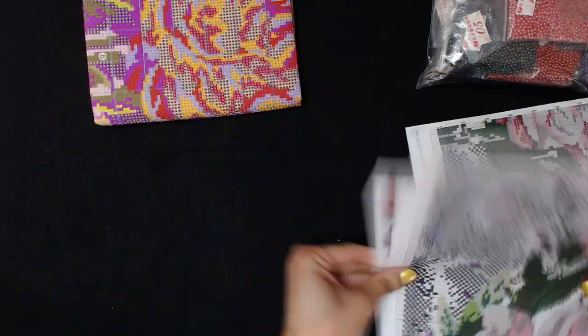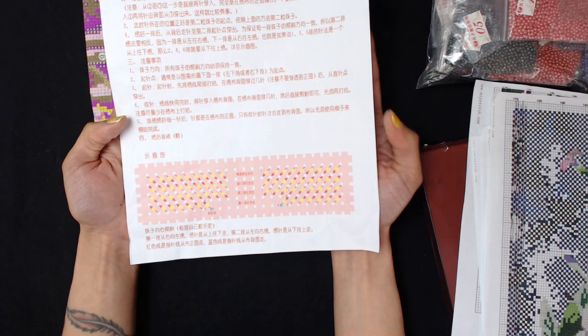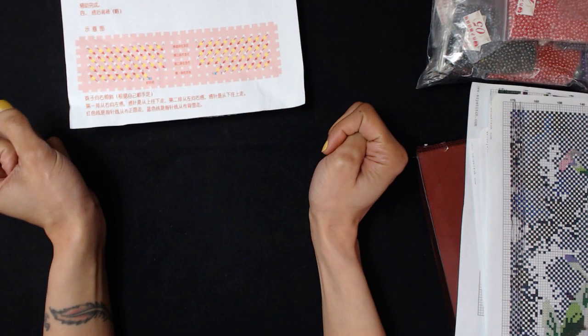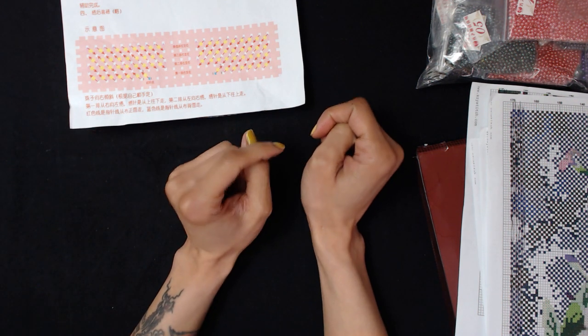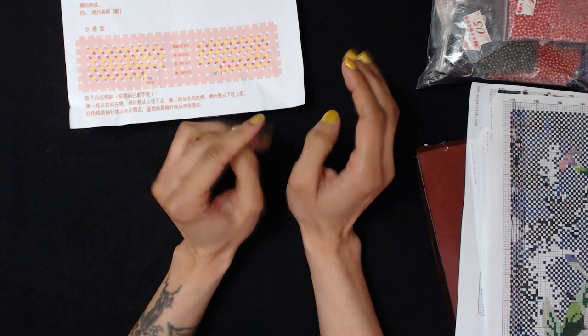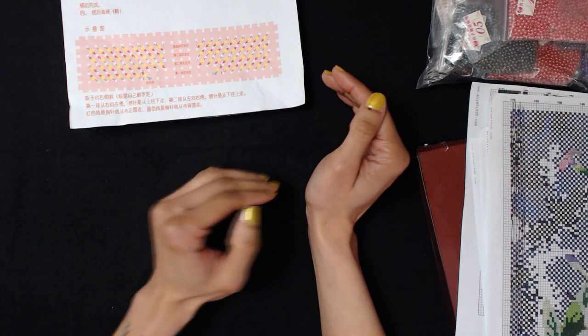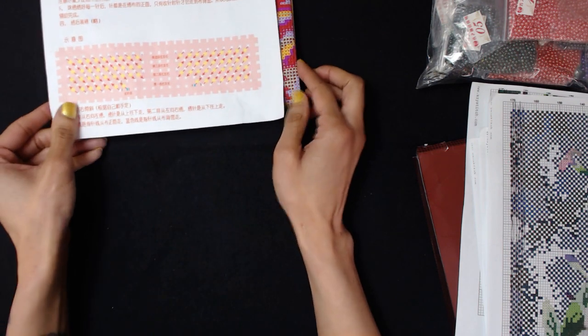The instructions here, all in Chinese which is fine, are for just regular beaded embroidery, not what I was looking for, not what I ordered. So I was very very disappointed in that and I quickly messaged this seller and I said hey I ordered double-sided pearl embroidery, you've sent me this, is this correct? Can you send me instructions on how to do the double-sided pearl embroidery?